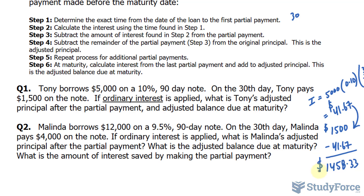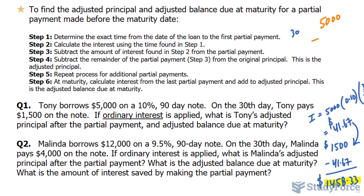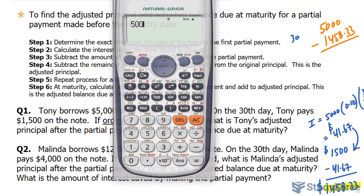Step four: subtract the remainder of the partial payment from the original principal — this will be your adjusted principal. So I'll take $5,000 minus $1,458.33. That gives us an adjusted principal of $3,541.67.